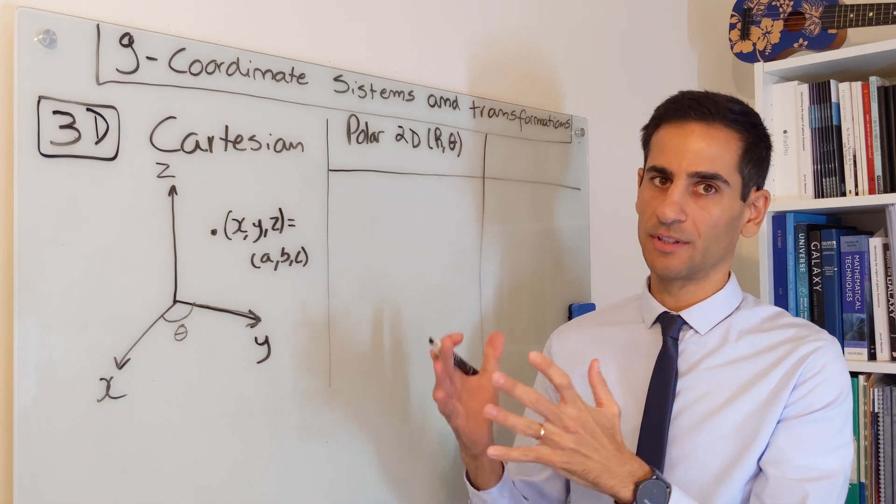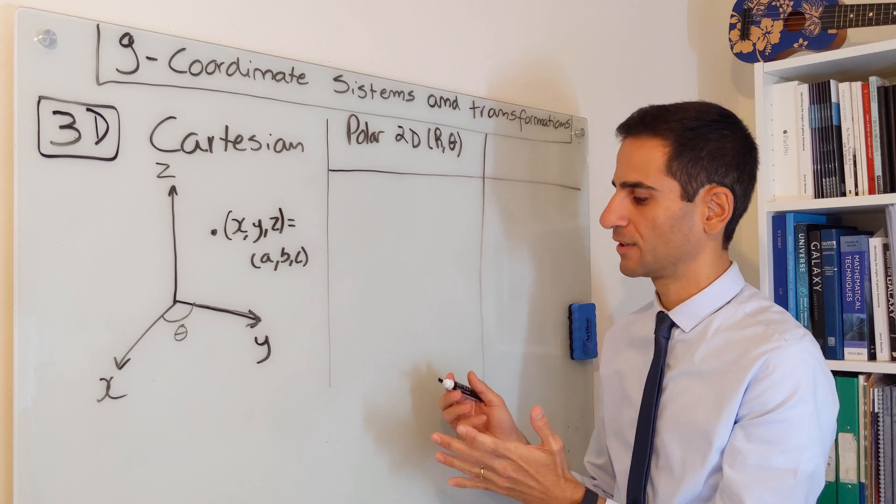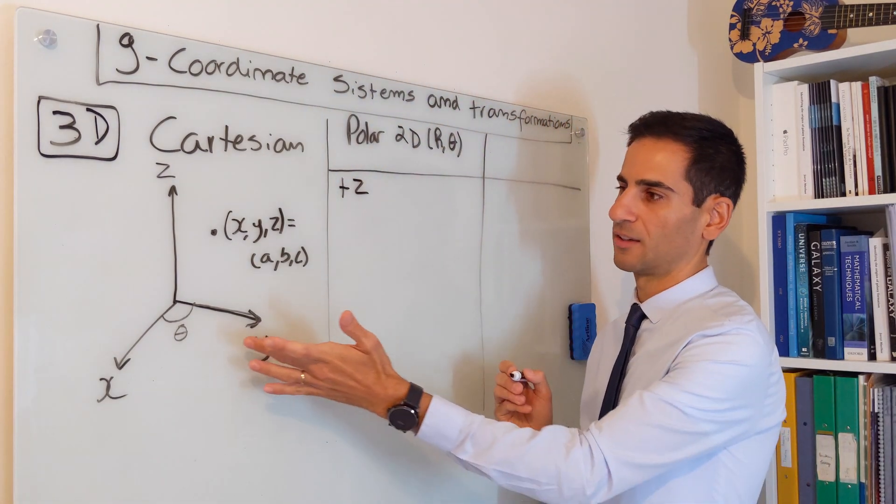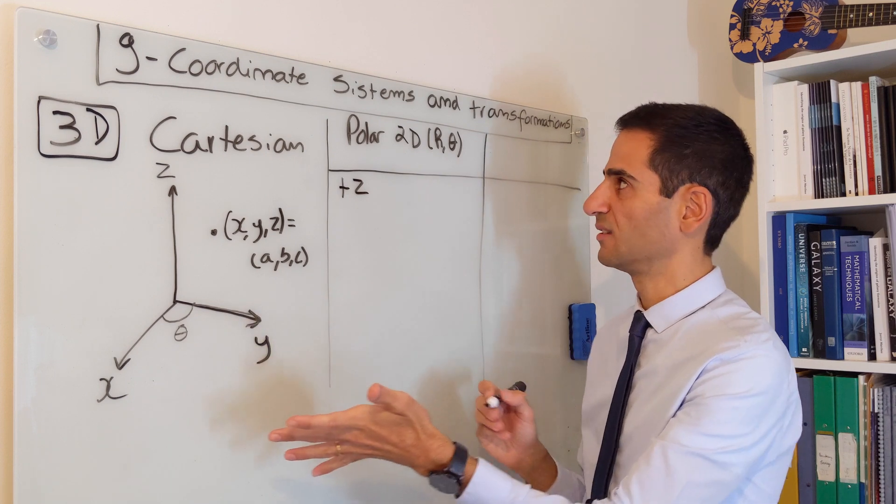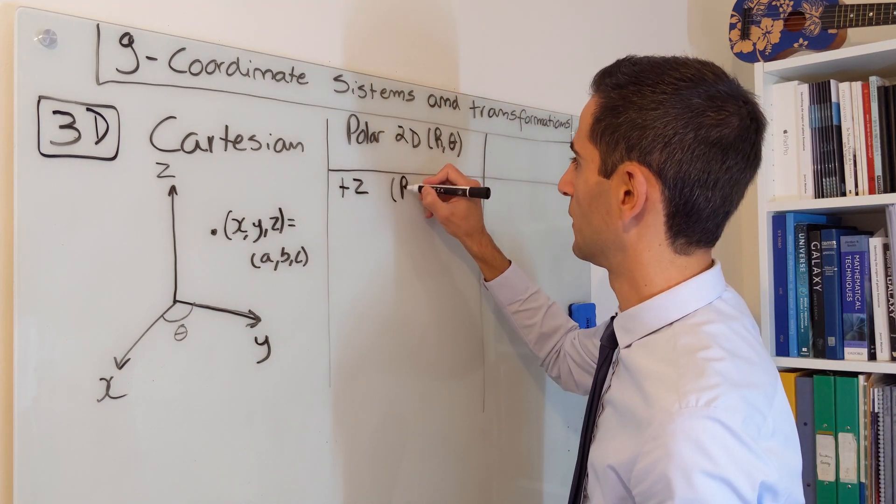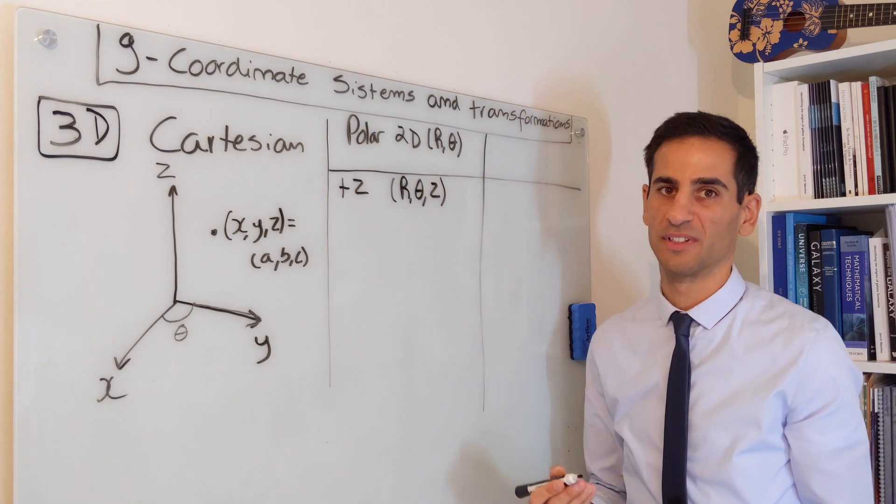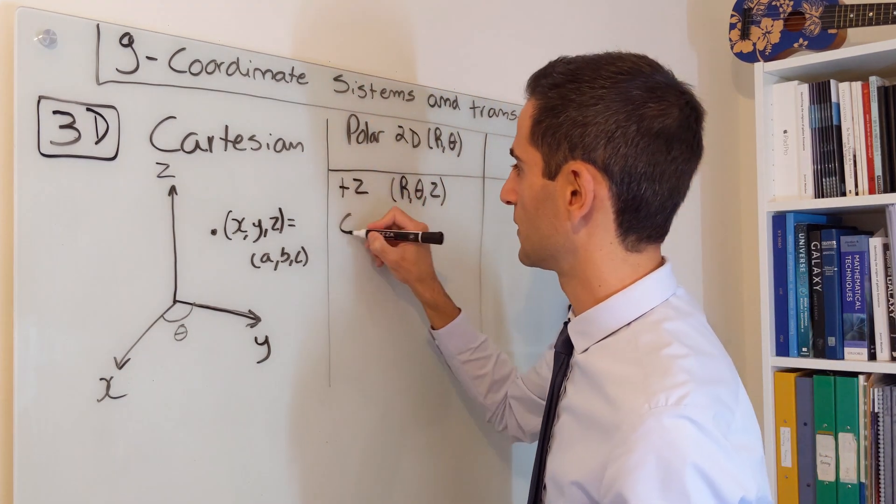For extending polar coordinates to 3D we have a choice. We can add something like for Cartesian another distance, say you end up with r, theta and then some coordinate z. These are called cylindrical coordinates.